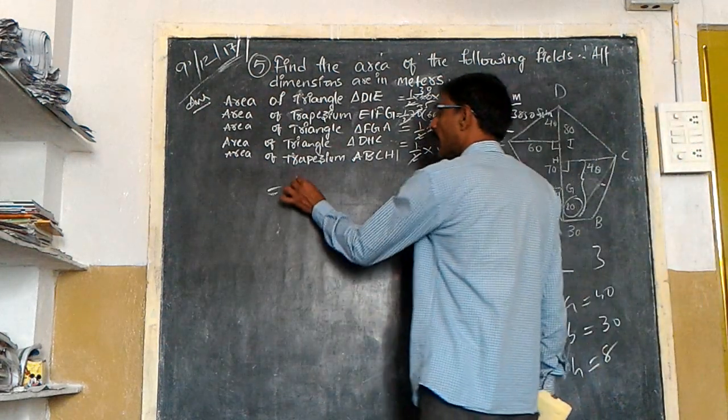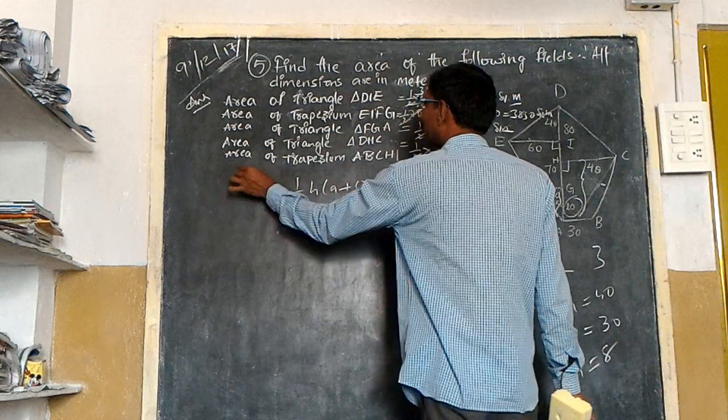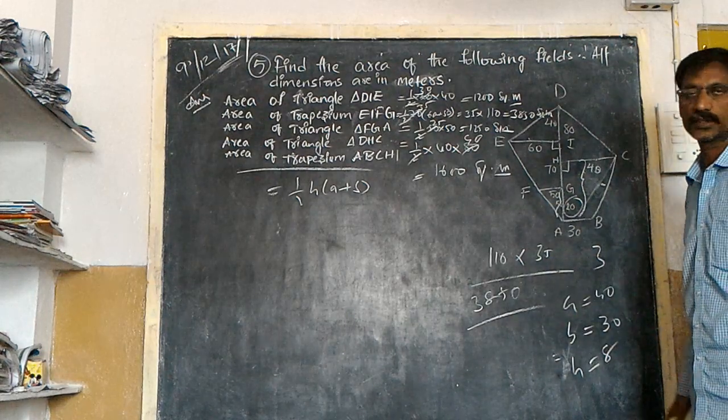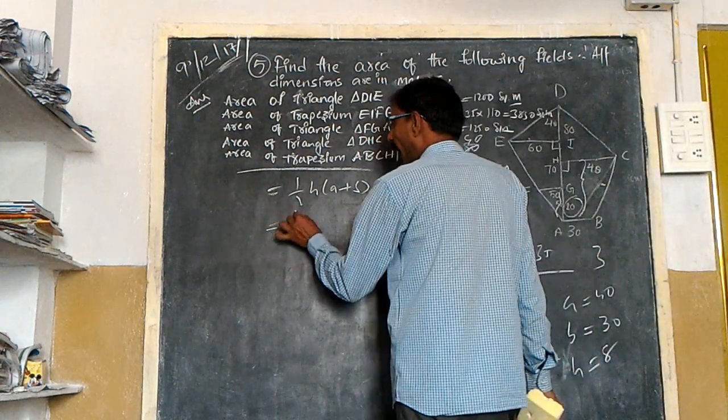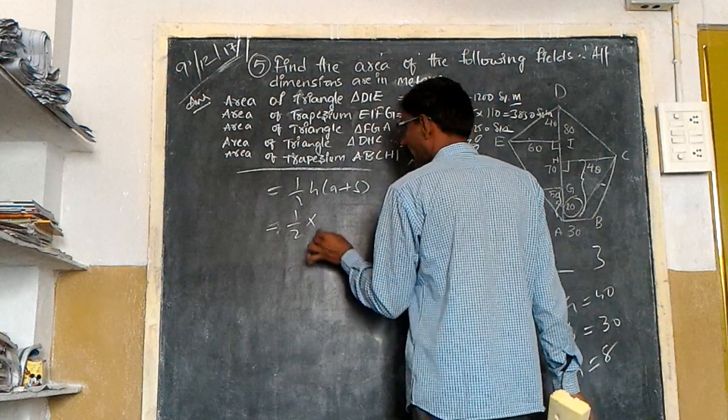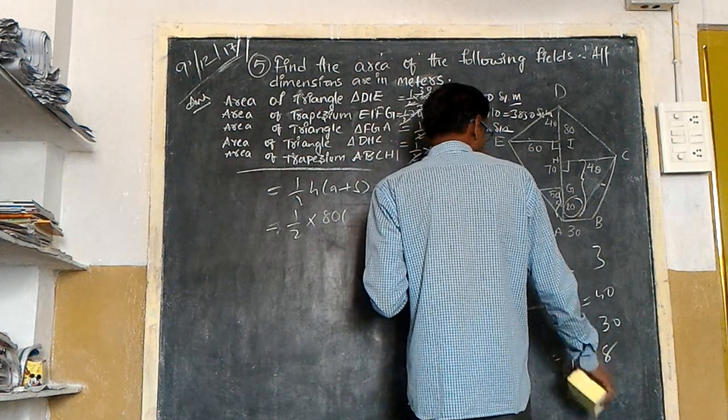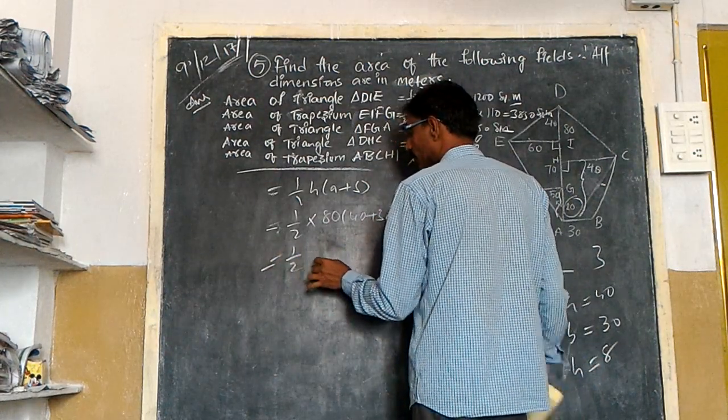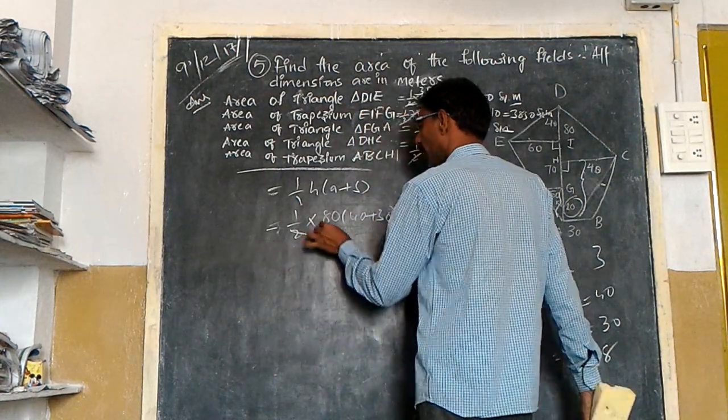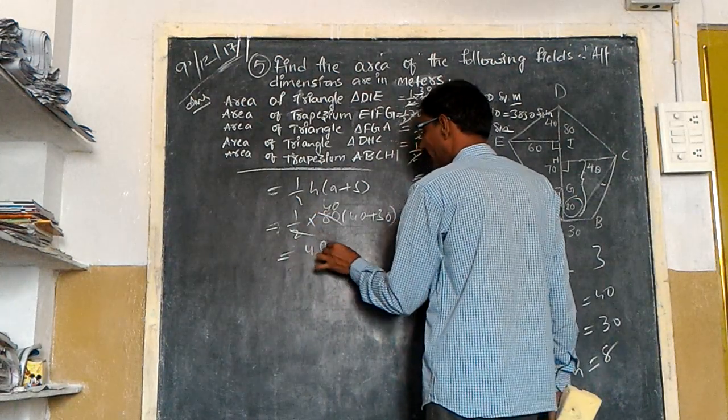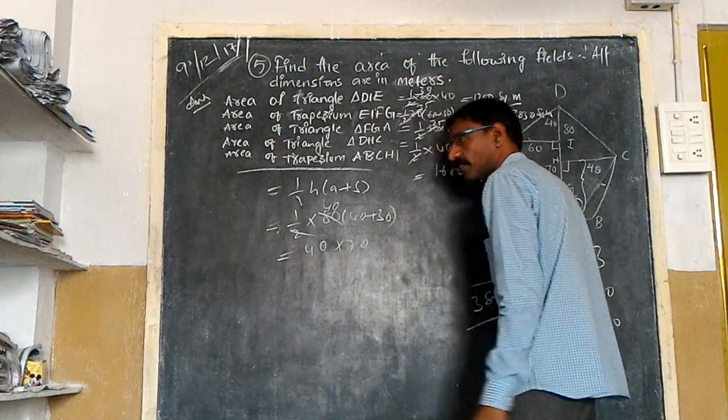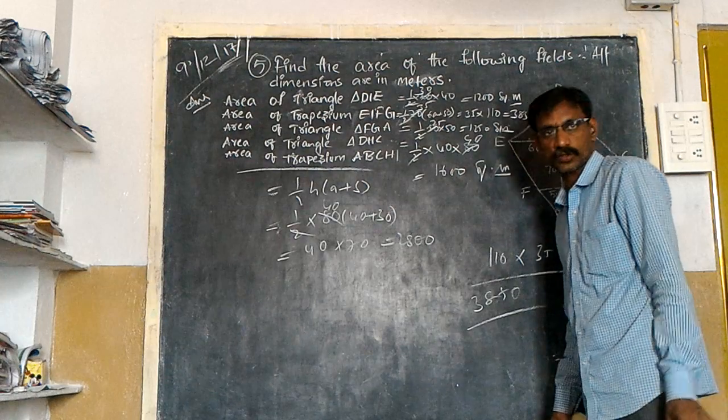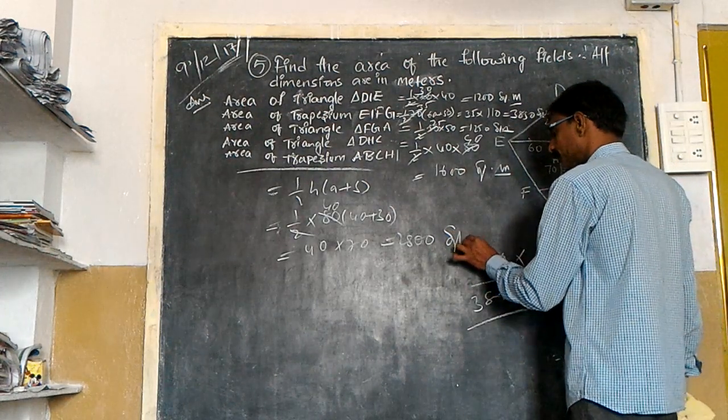By applying half H into A plus B because it is a trapezium. Half into H is 80, A plus B is 40 plus 30. That is equal to half into, you have to cancel it, 40 times. 40 into 70. Seven fours are 28. Keep two zeros. 2800 square meters.